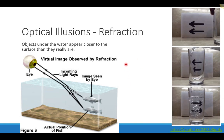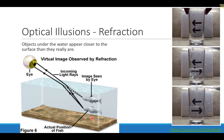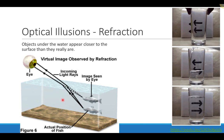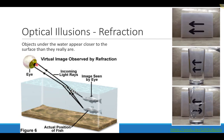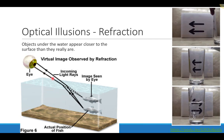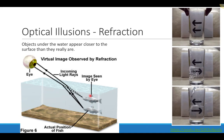Objects underwater actually appear closer to the surface than they really are because of refraction. Light leaving the fish travels up through the water, hits the surface, and bends. Because light is traveling slower in water and faster in air, it bends away from the normal so the refracted angle is larger. Since the eye believes light travels in a straight line, if you follow those rays back to where they converge, the fish appears higher up in the water than it actually is.